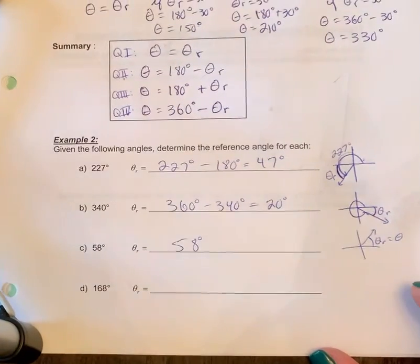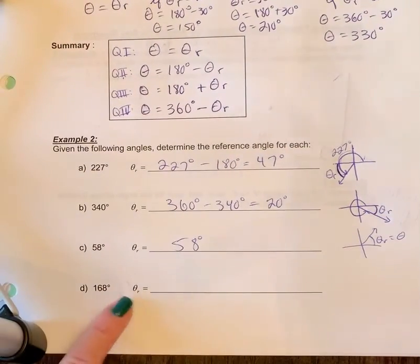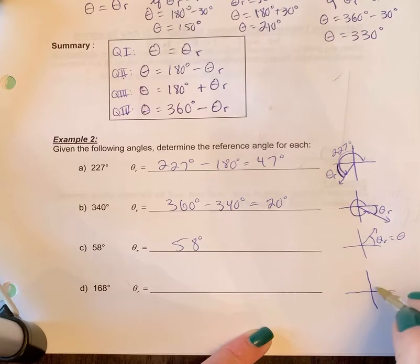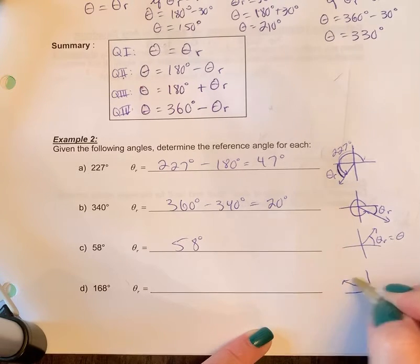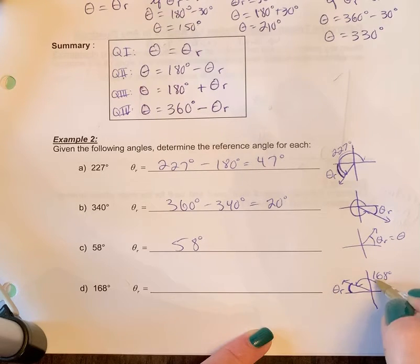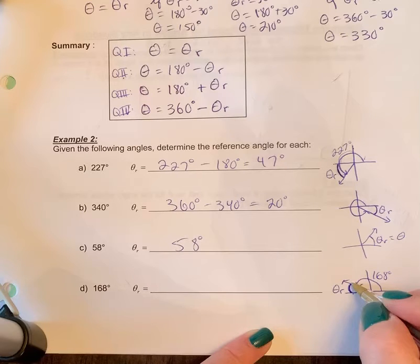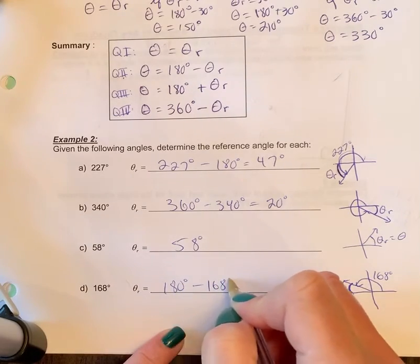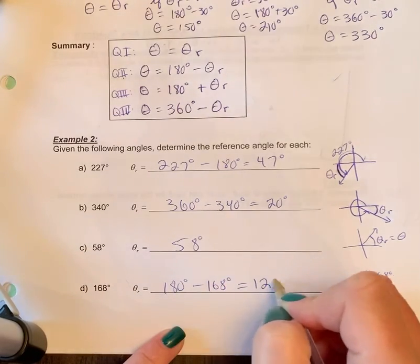And if we take a look at part d, 168 is between 90 and 180, so it's somewhere in quadrant two. This is the 168, or that's the standard position angle. I want to know what's the reference angle, the angle to the nearest x-axis. So I would take 180 minus theta r - sorry, 180 minus 168 to find theta r. And we'd get 12 degrees.